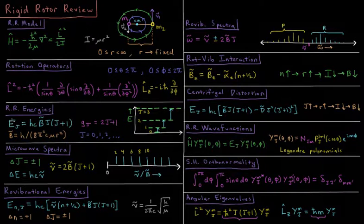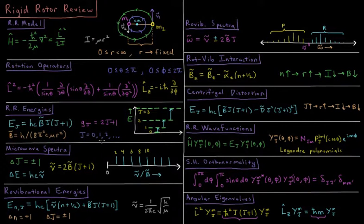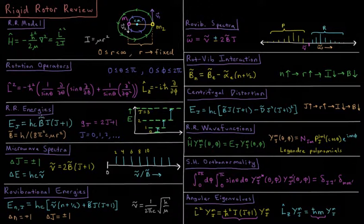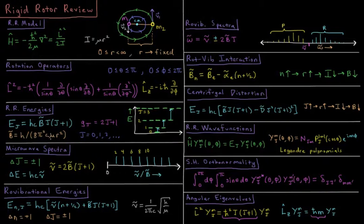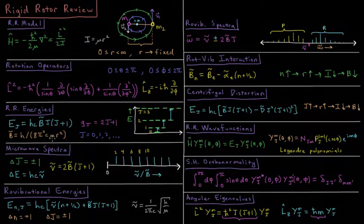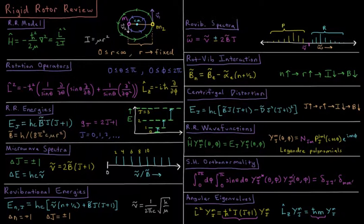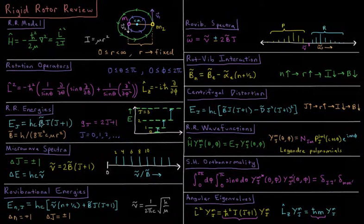The rigid rotor energies depend on a quantum number j, which starts at 0 and goes up as an integer, and also what's called a rotational constant b-bar, which is Planck's constant divided by 8 pi squared times the speed of light times the reduced mass times bond length squared. As the reduced mass or bond length go up, b-bar goes down, and the separation of the energy levels is primarily determined by this rotational constant.